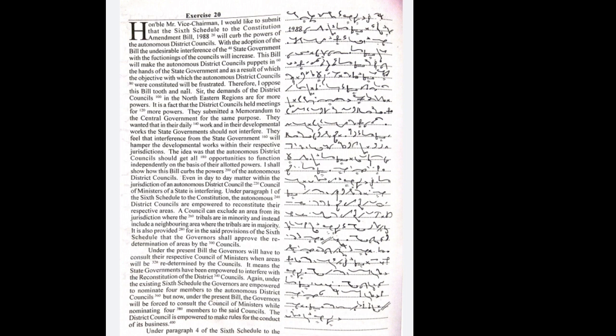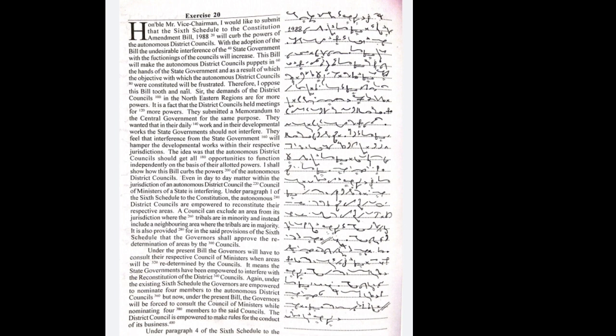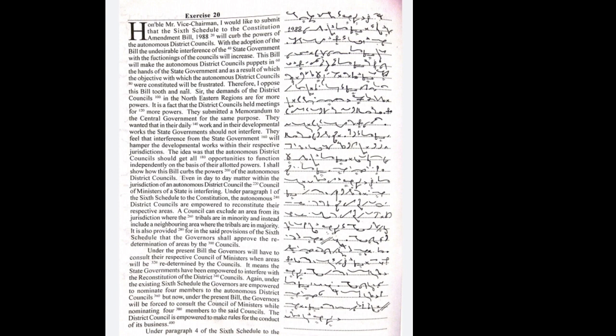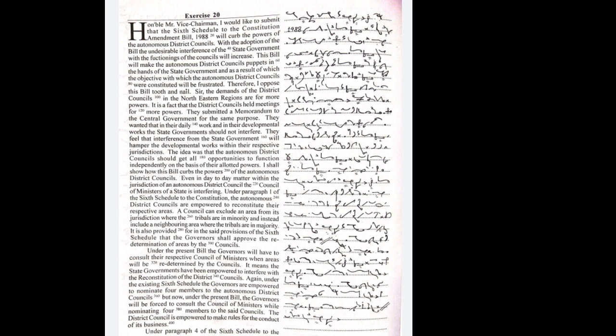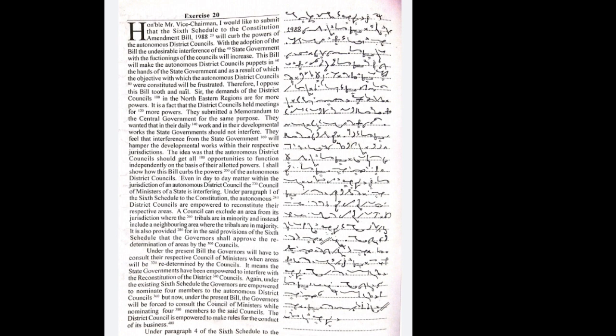It means the State Governments have been empowered to interfere with the reconstitution of the District Councils. Again, under the existing Sixth Schedule, the Governors are empowered to nominate four members to the Autonomous District Councils.